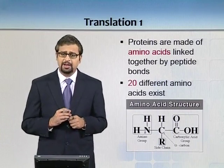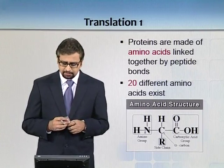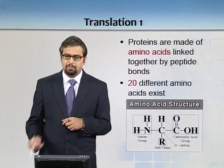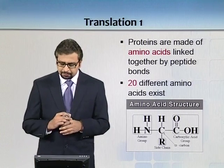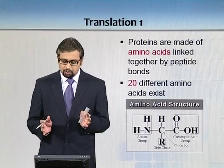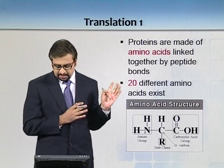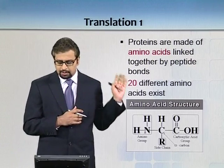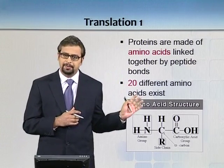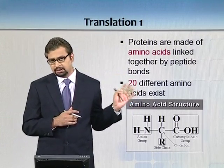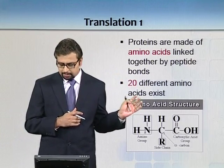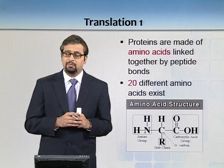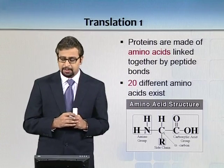Before we proceed, what are proteins? Proteins are made up of amino acids linked together by peptide bonds. What you are watching on your screen is a typical amino acid structure, where you can see an amino group on one hand and a carboxylic group on the other. The R represents 20 variable side chains, which we will discuss in a separate topic.